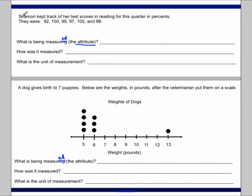So let's read this story and figure out the context of these pieces of data. Siramori kept track of her test scores in reading for this quarter in percents. So we know that she's keeping track of her test scores. And these grades are 92, 100, 95, 97, 100, and 98.